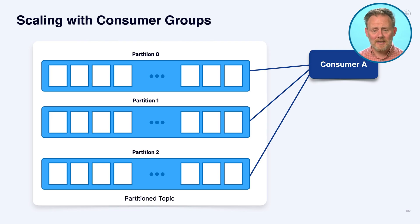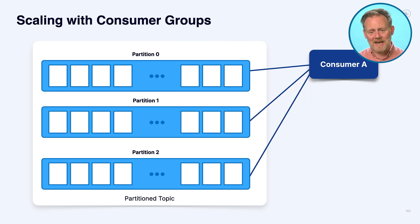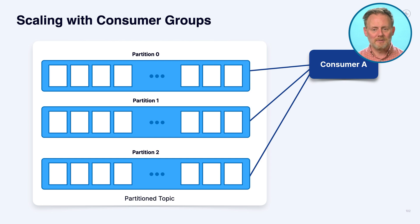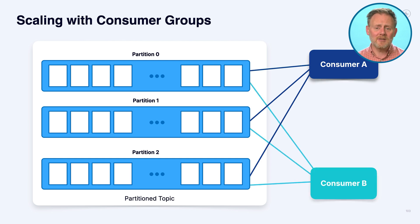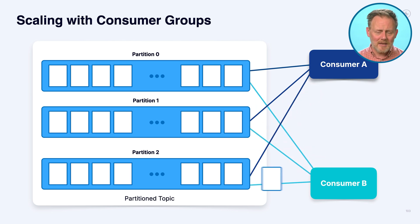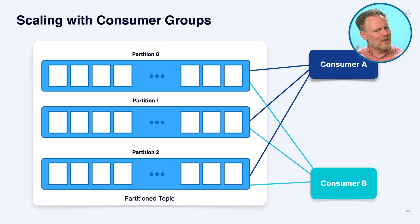Consumers can scale — they form what are called consumer groups. Here I've got consumer A and a three-partition topic. When consumer A is reading messages from that topic, they could come from any of the three partitions, and it can only really be processing one at a time. Consumers are fundamentally single-threaded things. I could also have consumer B — consumer A is reading messages, consumer B is reading messages, and A and B are operating independently. But they're both single-threaded, just one message from one partition at a time.